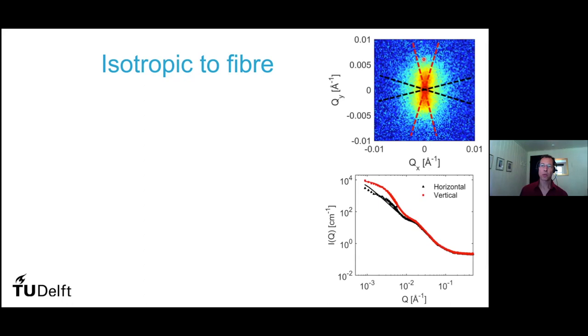Now if you start to make sector cuts and look at scattering in the vertical direction, in the horizontal one, you can see it here. Then you see that for the large Q factors, the large angles, corresponding to the short distances, the scattering is the same. So that shows that at the short length scales, it's still isotropic protein. At the longer length scales, you get the anisotropy.